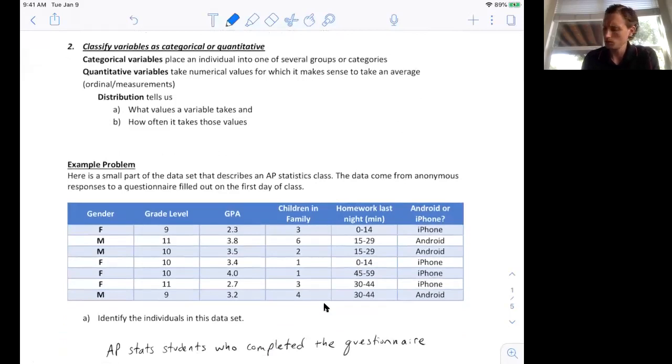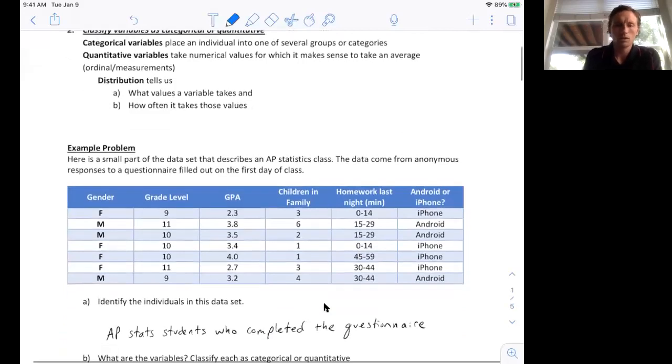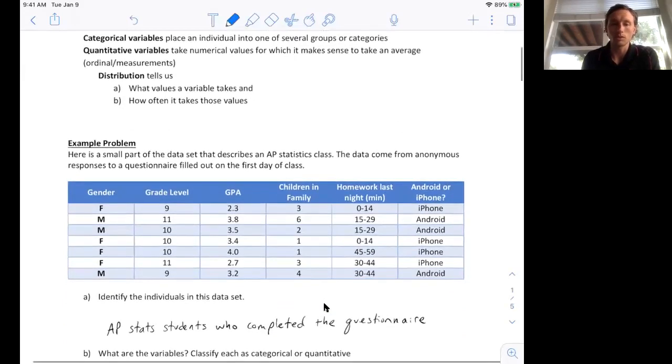The next question, what are the variables? The variables are what we know about the individuals. So what do we know about them? We know their gender, grade level, GPA, number of children in their family, number of minutes they spent on homework last night, and whether they use an Android or an iPhone.